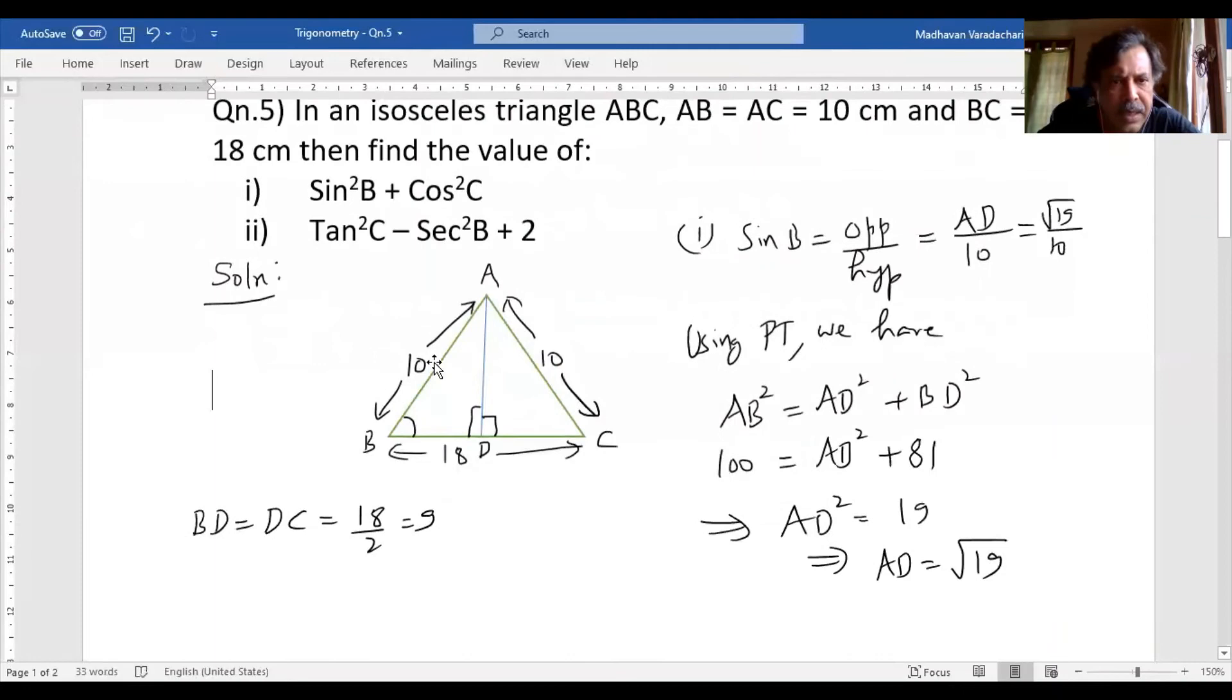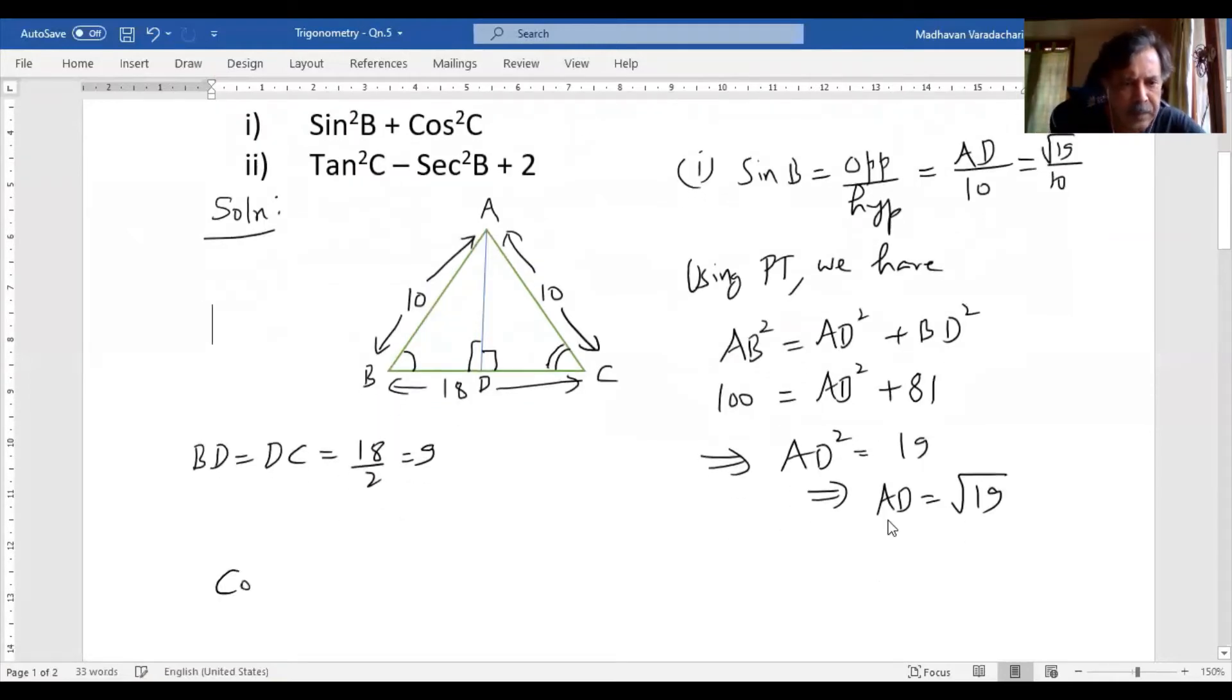So what we did is we found what is sin B. Now we are supposed to find out what is cos C. So let me put double curve just to differentiate this angle B and angle C. Now cos C, what is that? It is adjacent by hypotenuse. What is adjacent of C? It is DC. Hypotenuse of C is AC. So what is DC? You know it is 9 divided by AC, it is 10. So 9 by 10 is your cos C.